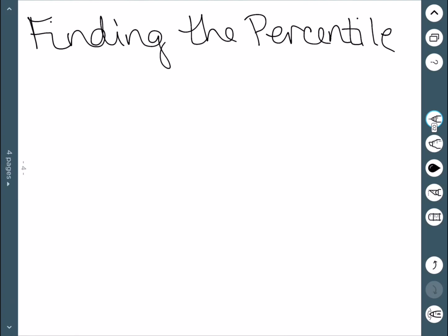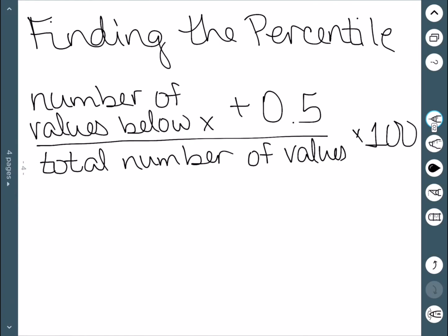We'll first look at how to find the percentile if we know what data we want to deal with. Here is our formula for finding the percentile. We need to order the data, and then we look at the number of values below our number X. We add 1/2 and divide by the total number of values. Since we want this to be in terms of a percentage, we then multiply by 100.